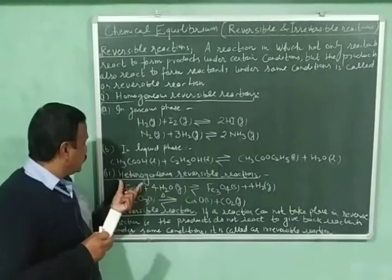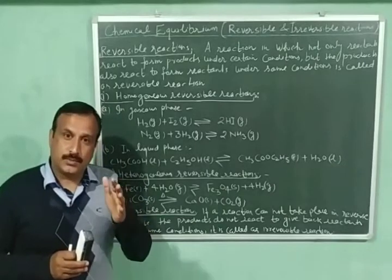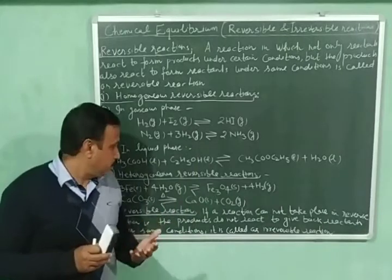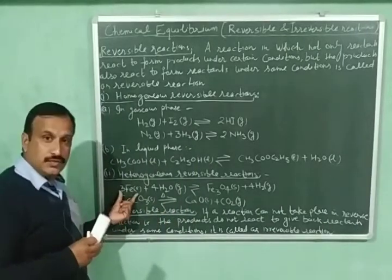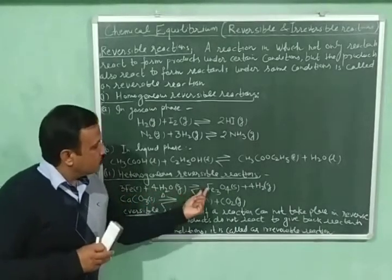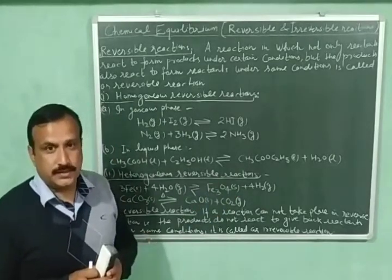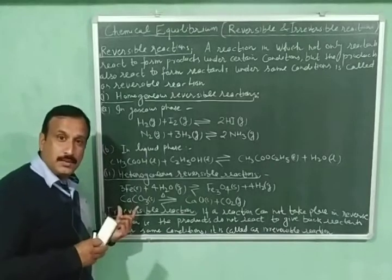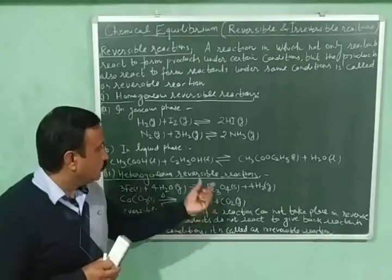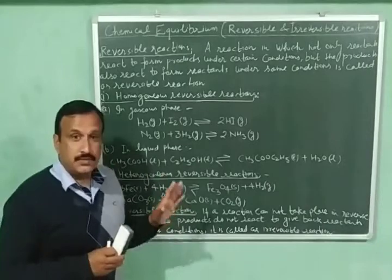Now let us discuss heterogeneous reversible reactions. These are reactions in which the reactants and the products can be present in two or more than two phases. In the first example, three moles of iron solid are reacting with four moles of water vapors giving one mole of Fe3O4 solid and four moles of hydrogen gas. In the second example, one mole of calcium carbonate solid is decomposed into one mole of calcium oxide and one mole of carbon dioxide. These are examples of heterogeneous reversible reactions.